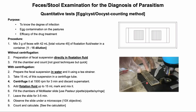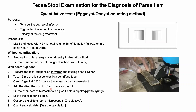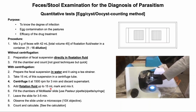Now I will explain how to perform the modified McMaster test with centrifugation. First, dilute the sample in the same 1:15 ratio in water instead of flotation fluid, then filter it using a tea strainer. Take 15 ml of the fecal suspension in a falcon tube and centrifuge at 1500 rpm for 3 to 5 minutes. Discard the supernatant, add flotation fluid up to the 15 ml mark, and mix properly. Fill both chambers of the McMaster slide, allow 3 to 5 minutes for stages to float, and examine both chambers to count the eggs.